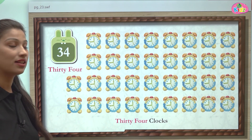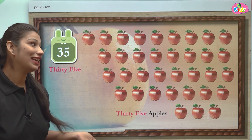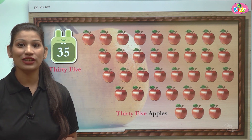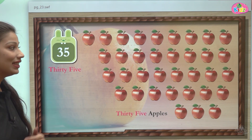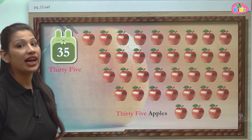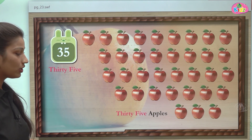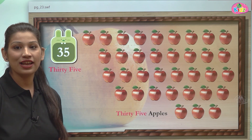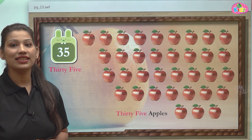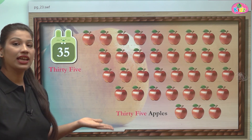After 34, there comes number 35. 35 is 35. And here we can see apples. An apple a day keeps the doctor away — apple is a very healthy fruit. These apples are 35 in number. 35 is 3 and 5. T-H-I-R-T-Y is 30, F-I-V-E is five — 30 and 5 make 35.